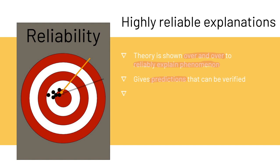For example, Einstein's theory of relativity gave predictions about the way light bends around stars. That theory was tested early on during a solar eclipse — the moon went in front of the sun, creating an opportunity for scientists to look at stars that are usually behind the sun. And they could see the bending of light from those stars around the sun because of the sun's gravity.